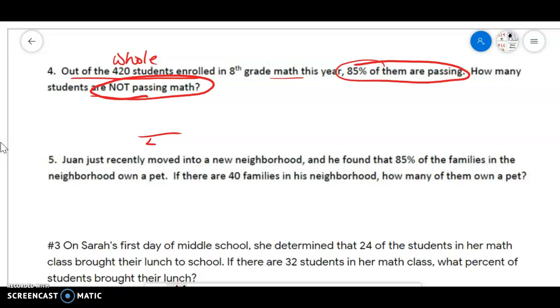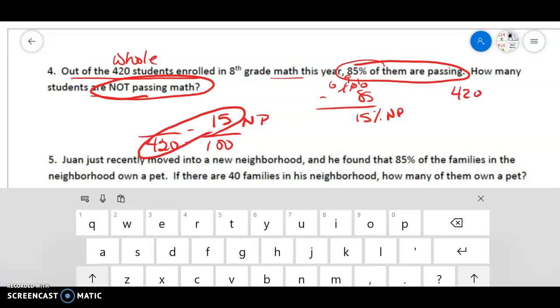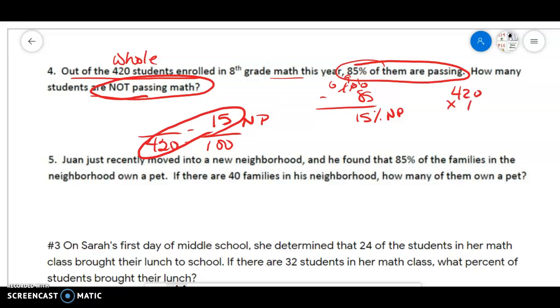So when we set up our proportion, 420 is equal to something over 100. So you can do this a couple of ways. We want not passing. So if we have 100% and 85% are passing and we borrow here, then we have 15% not passing. So then we could cross multiply and divide.